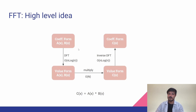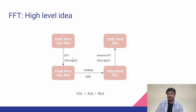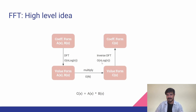The multiplication step in value form is a linear-time operation. So if we can find an asymptotically fast way to convert between coefficient and value form, the whole algorithm will be very fast. That is exactly where DFT and inverse DFT come in. DFT converts coefficient form to value form in O(n log n) time, and inverse DFT converts value form back to coefficient form. The overall algorithm then takes O(n log n) + O(n) + O(n log n) = O(n log n) time — which is why FFT runs in O(n log n).